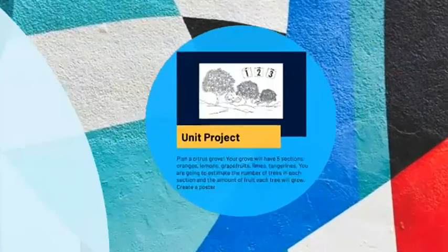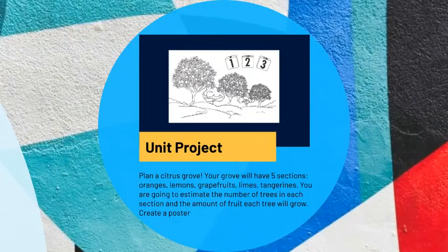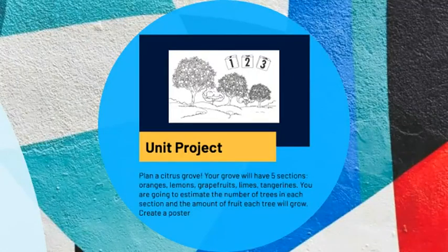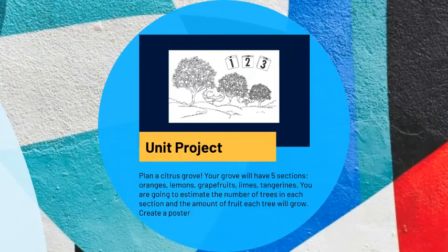Let's take a look at what the unit project is going to be. The unit project is really cool — you're going to plan a citrus grove, which is like a garden. Your grove is going to have five sections: orange, lemons, grapefruits, limes, and tangerines. You're going to estimate the sum of trees in each section and the amount of fruit each tree will grow, and you're going to create a poster. You'll roll dice to find the total trees in each of those five sections, find the estimate, and then find the total fruit on each tree and its estimation. We're going to be using both addition and subtraction and estimation in this unit project.